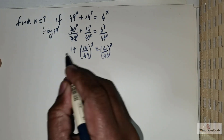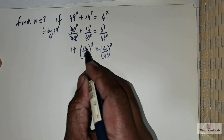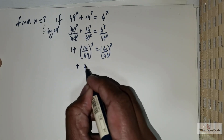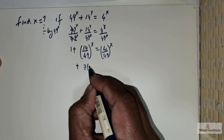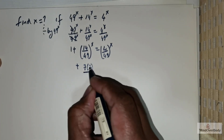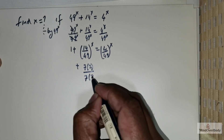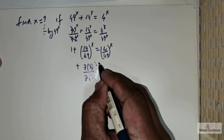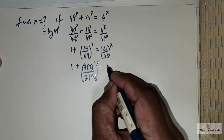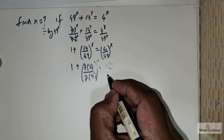I am just doing some basic alignments. Now 14 over 49 — I am going to write 14 as 7 multiplied by 2, and 49 as 7 multiplied by 7, so that is raised to the power x. This 4 I am going to write as 2 squared, and 49 I am going to write as 7 squared.